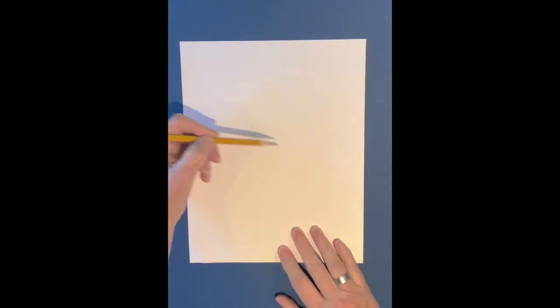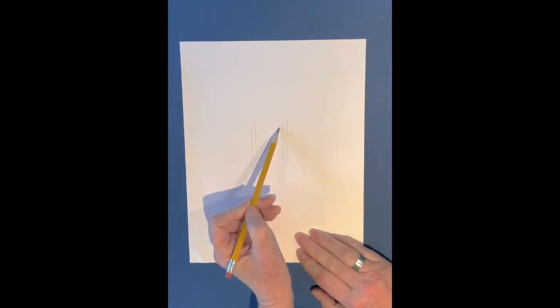So we're going to start off by drawing two parallel lines. This is going to be the back of the chair and we're just going to round the top and come back down again and then we're going to make the ladder of the chair, the back of the chair, by making arches.